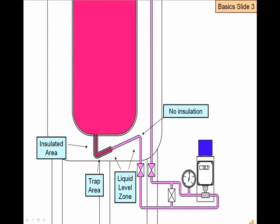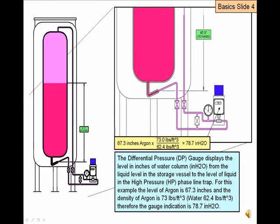The HP line design is key in making the differential pressure gauge read accurately. Over the years, the design of this line has changed due to insulation systems and the need for more accurate measurement. The graphic shows an HP line that has a 10-inch trap section with the bottom of the trap insulated and the majority of the trap section exposed. This bare pipe section helps maintain the liquid height within this zone. This example has a measurement of 67.3 inches of argon above the liquid in the trap.